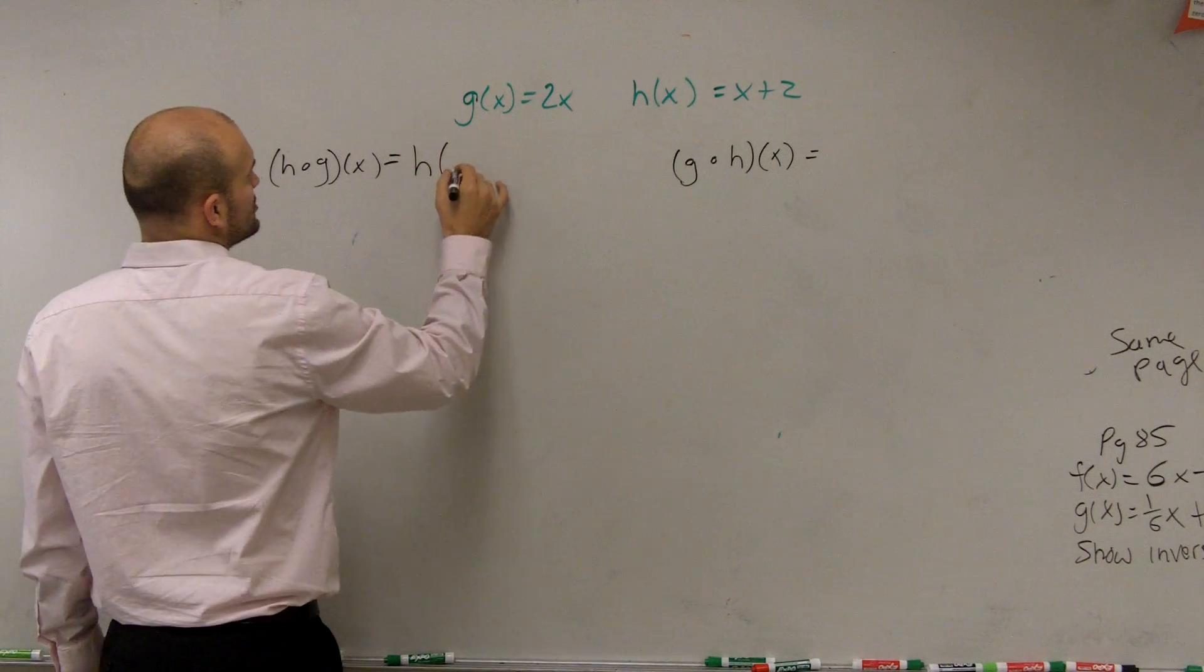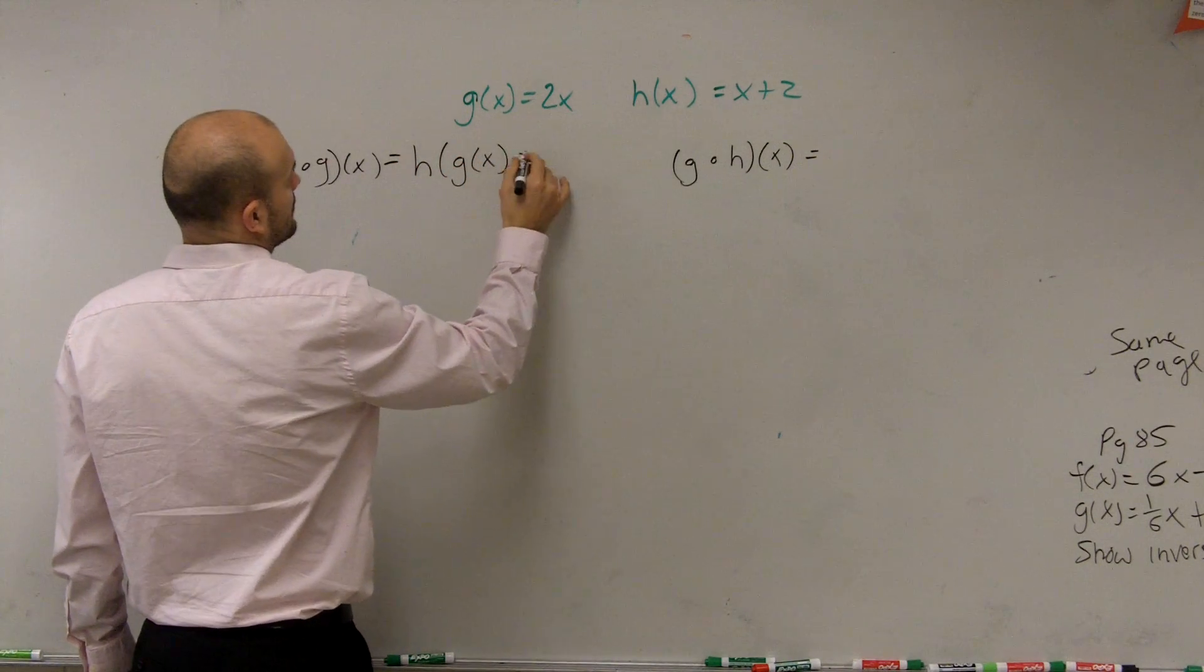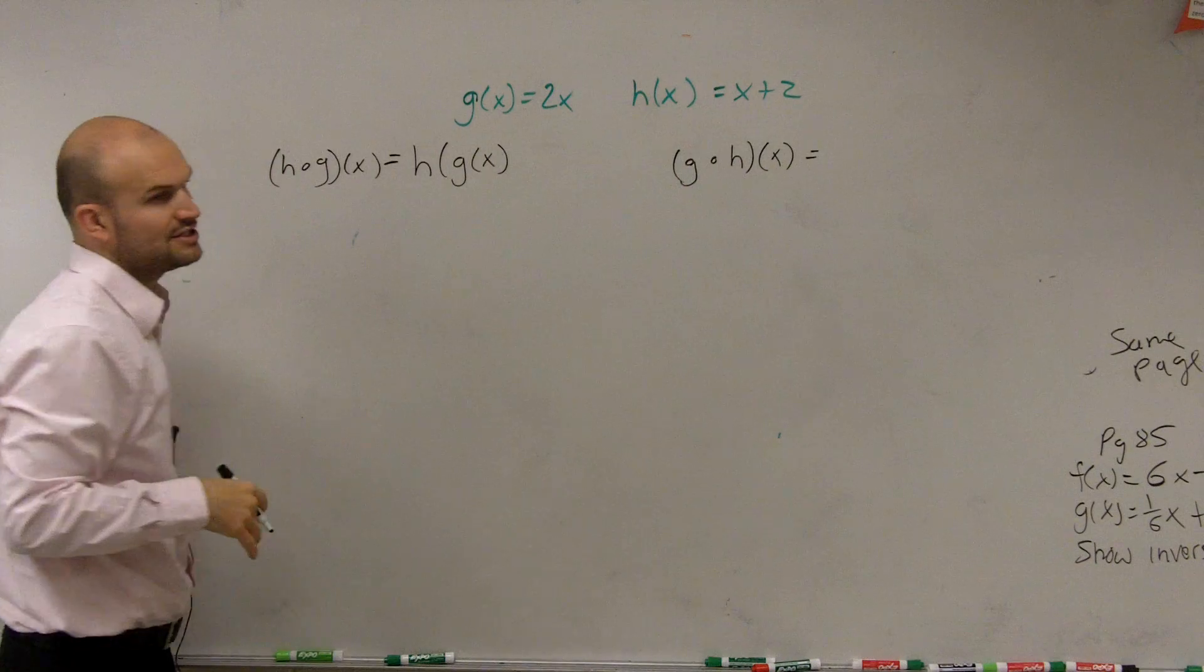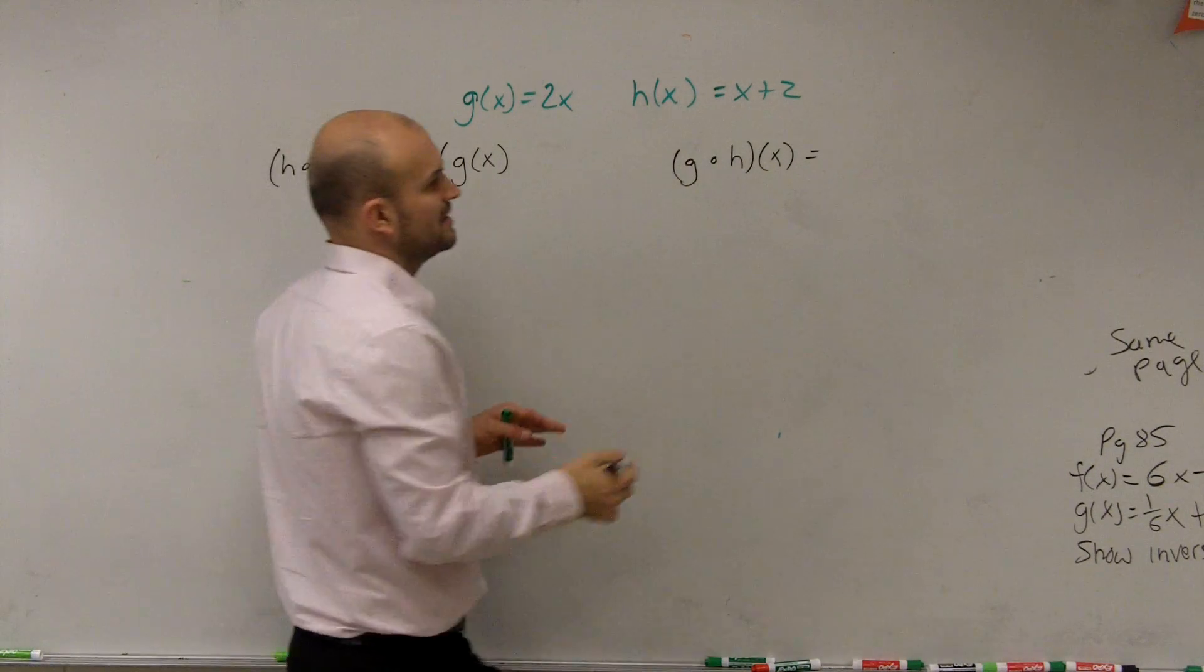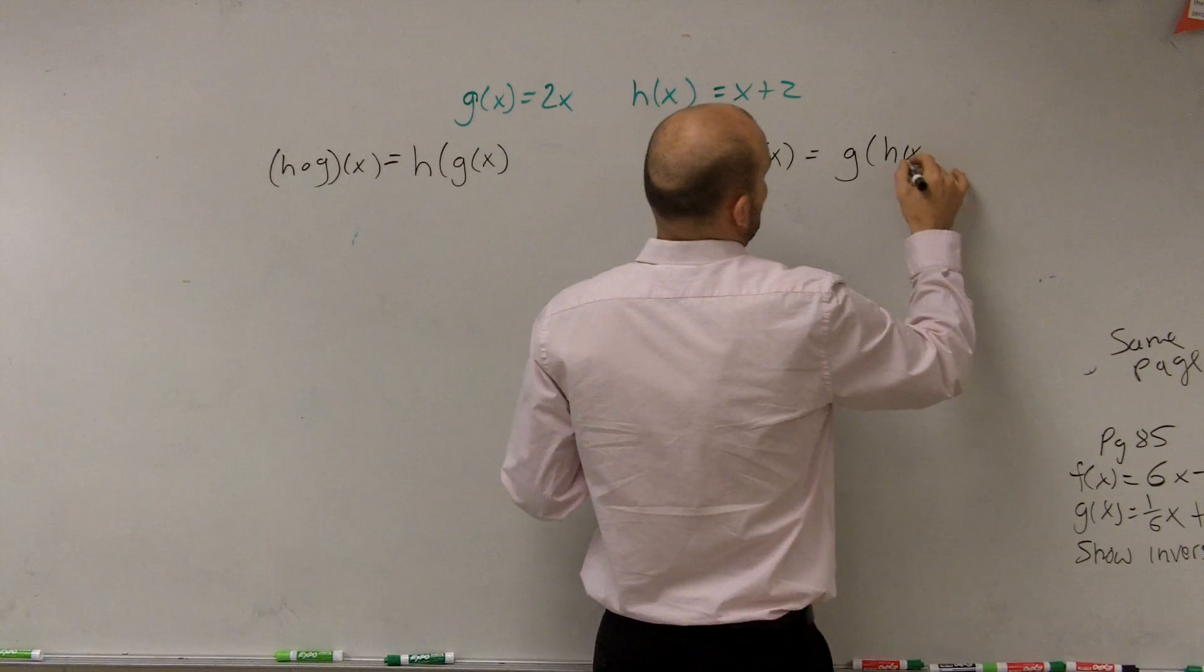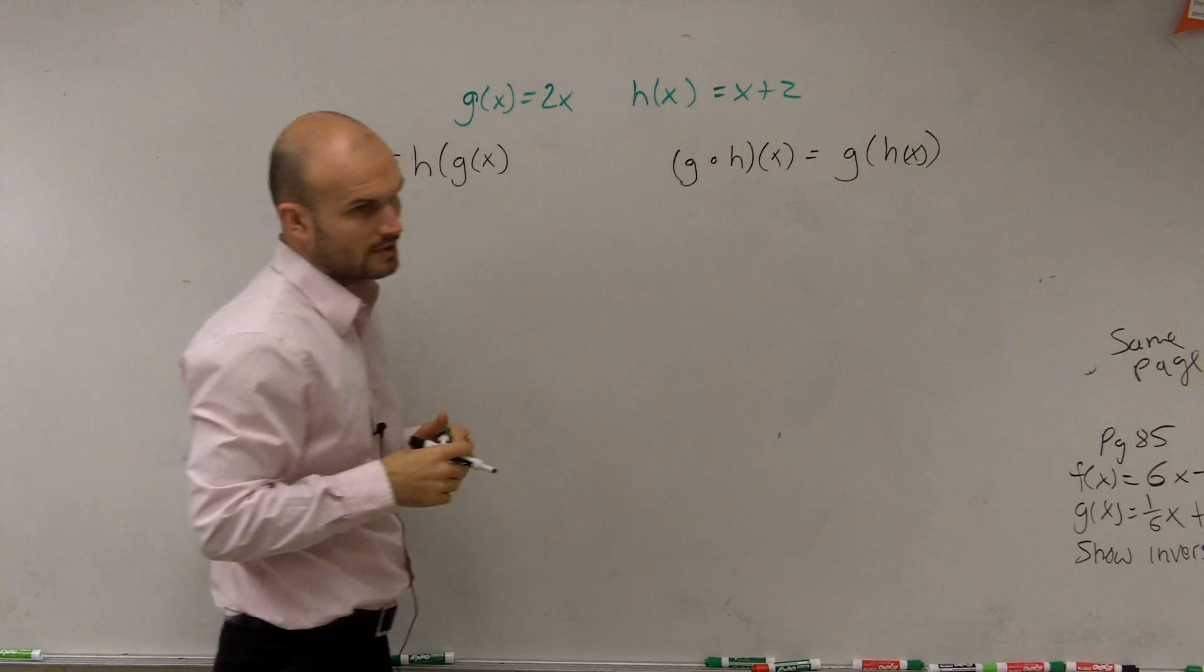So another way we could write this is h of g of x. And this one is going to be the exact opposite, which would be g of h of x.